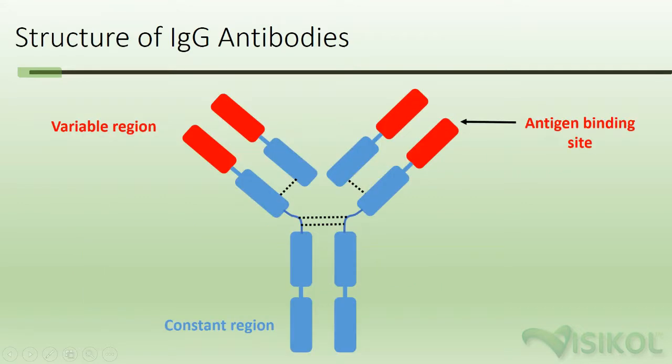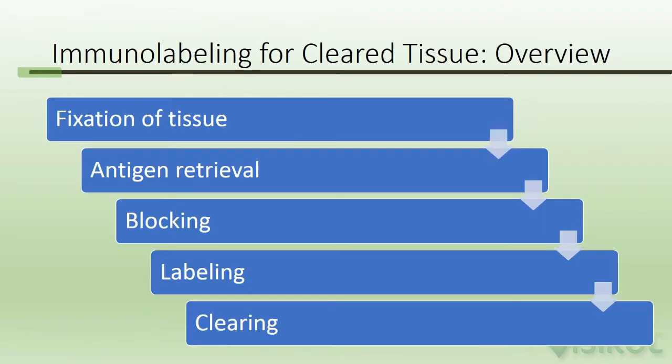In this slide, you see the structure of IgG antibodies. You can see here we have a variable region, an antigen binding site, as well as the constant region, which is the same for all IgG molecules.